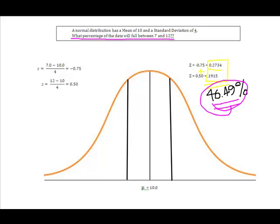and if I looked at it in piece parts, what I would know is that 27.34% falls between this value of 7 and the mean, and 19.15% falls between this area, which is the area between 12 and the mean. And that the total added together of these two gives me my 46.49%.